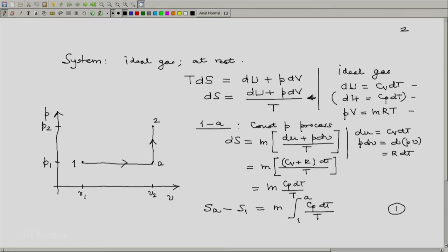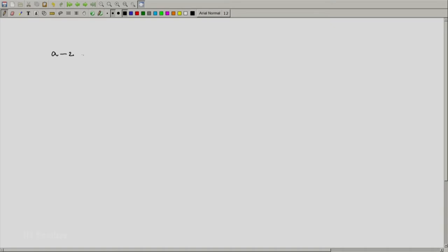Now let us consider the second process from A to 2, the vertical line which is a constant volume process. The second process is a constant volume process and matters simplify significantly. This implies dV is 0. So our dS expression simply becomes dU by T which will become M into Cv dT by T.